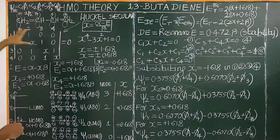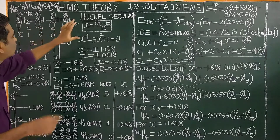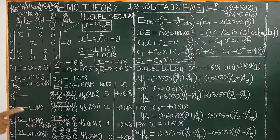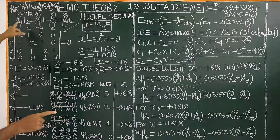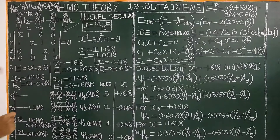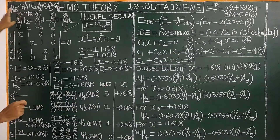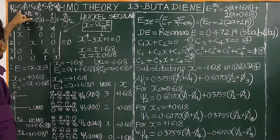Let us consider the structure of 1,3-butadiene. It consists of 4 carbon atoms, each with 1 pi electron. Each 2pz orbital consists of 1 pi electron. Therefore, the molecular orbital is constructed by the linear combination of atomic orbitals (LCAO).